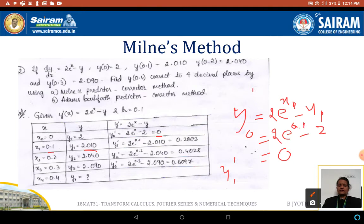On simplification, we are getting 0.2003. This is y₁ dash. Similarly, we are computing what is y₂ dash, y₃ dash and so on.